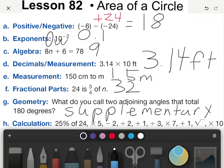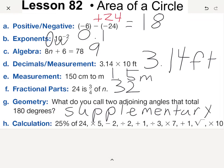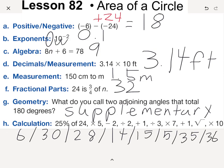Then 25 percent of 24, or one fourth of 24 is 6, times 5 is 30, minus 2 is 28, divided by 2 is 14, plus 1 is 15, divided by 3 is 5, times 7 plus 1 is 36, square root of that is 6, and times 10 would get us 60.